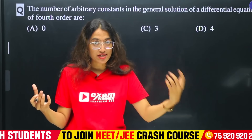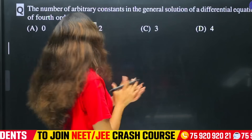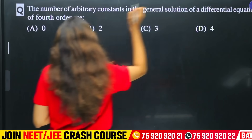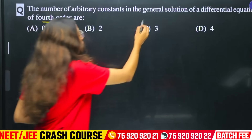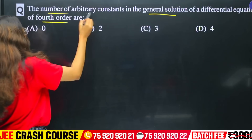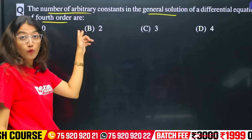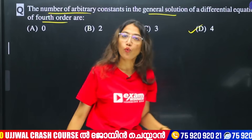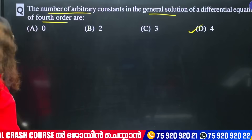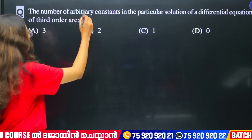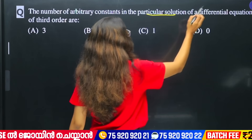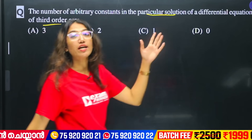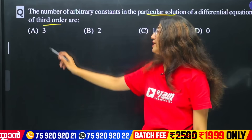What is the number of arbitrary constants? The number of arbitrary constants in the general solution of a differential equation of fourth order equals 4. The general solution is characterized by the number of arbitrary constants, and the order of the general solution is 4. So the number of arbitrary constants equals 4. For a third order equation, the number of arbitrary constants equals 3.